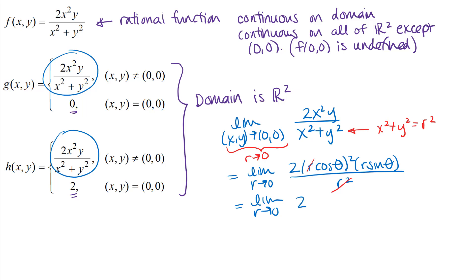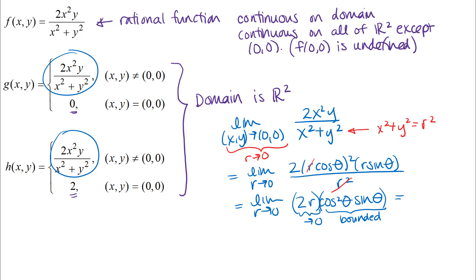I'm left with 2r·cos²θ·sinθ. I can think of this as a product of two expressions. As r approaches zero, the factor 2r approaches zero. The important thing to verify is that cos²θ·sinθ stays bounded — since cosθ and sinθ are always between -1 and 1, this expression stays between -1 and 1, so it remains finite. Something approaching zero times something that stays finite forces the entire expression to zero. Technically that's the sandwich theorem at work.